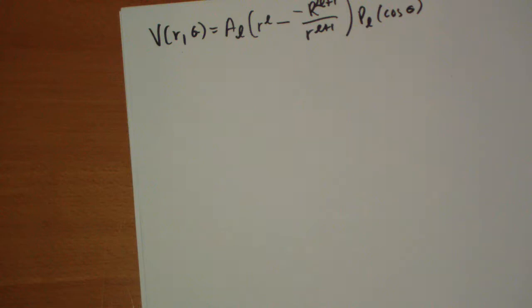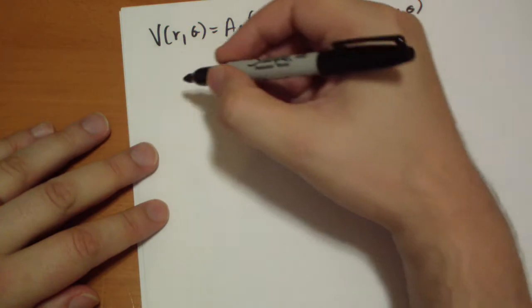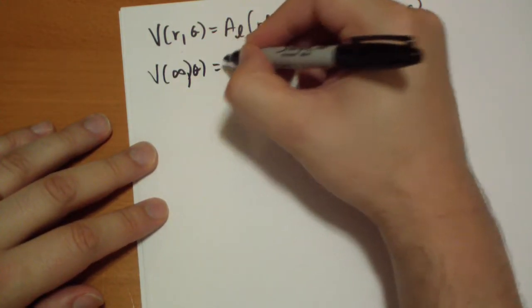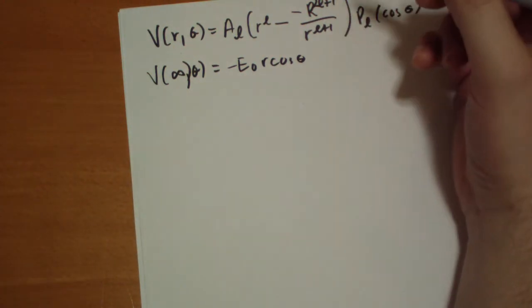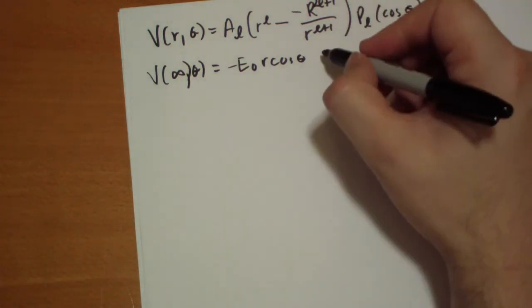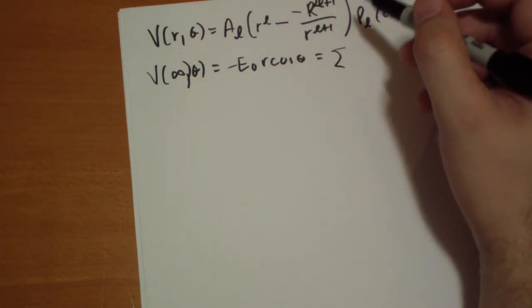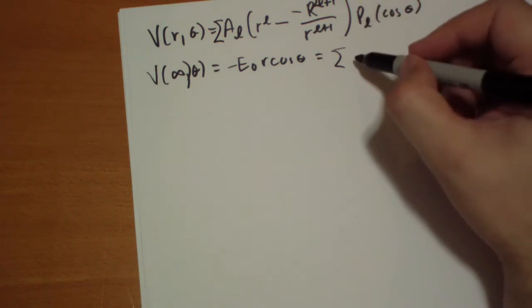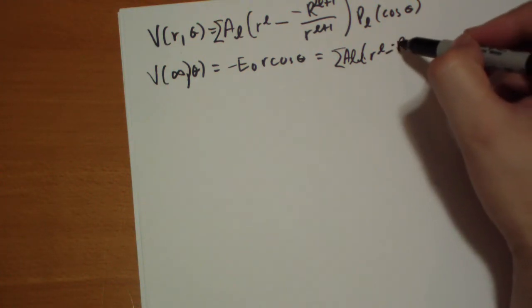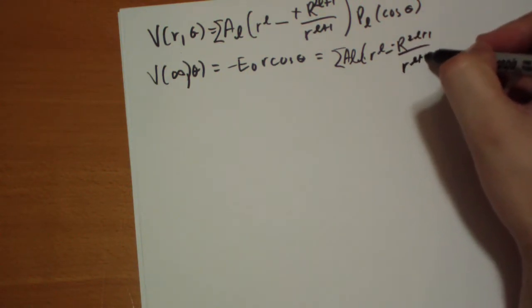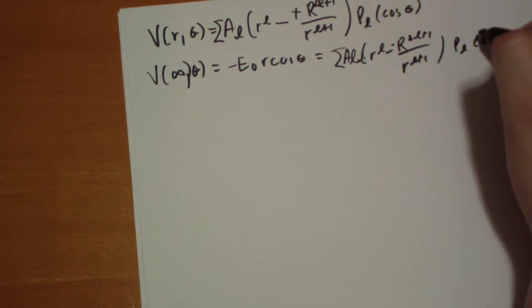Now the second condition is that as the R increases, as it gets very very large, we have to have the V tend towards negative E-naught R cos theta. So we get, this is a sum: sum of A_L times R to the L minus R^(2L+1) all over R to the L plus one, times P_L cos theta.